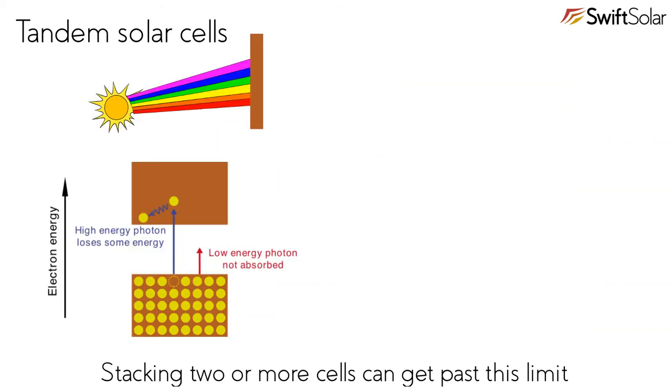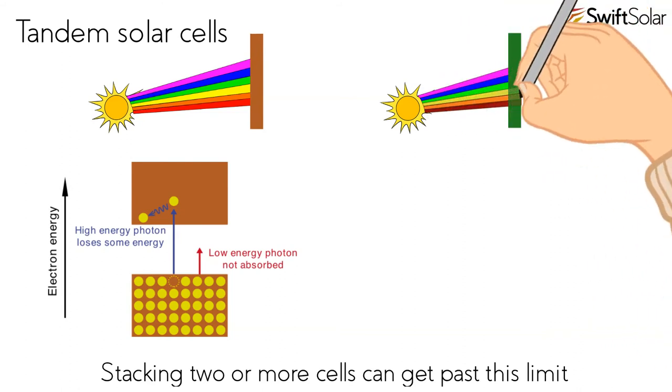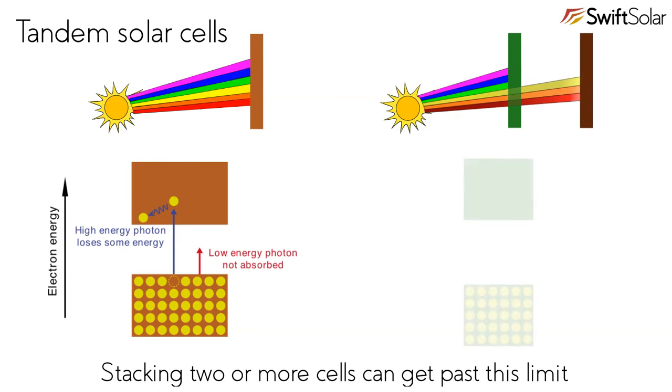The way to get around this limit is to combine solar cells with different band gaps that complement each other and stack them one on top of the other. The first cell has a large band gap and absorbs the high energy light.